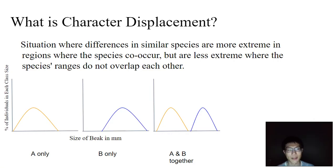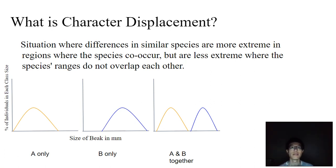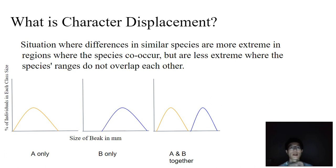Now, character displacement — what exactly is it? It's nothing really more than a situation where differences in similar species are more extreme in regions where the species co-occur, but are less extreme where the species ranges do not overlap with each other.